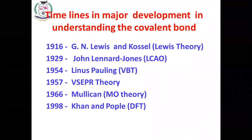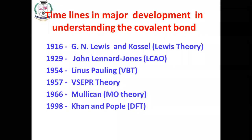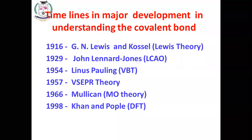The major theories which explain the chemical covalent bond were proposed by several scientists. In 1916, G.N. Lewis and Kossel proposed Lewis theory, explaining bonding by the octet rule. In 1929, John Leonard-Jones introduced the term linear combination of atomic orbitals. Linus Pauling proposed valence bond theory. Later, VSEPR theory was introduced, Mulliken proposed molecular orbital theory, and Walter Kohn and Pople proposed DFT — density functional theory. We are interested in LCAO and molecular orbital theory.